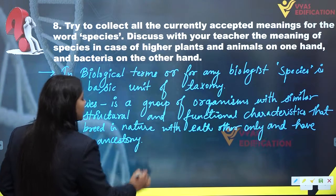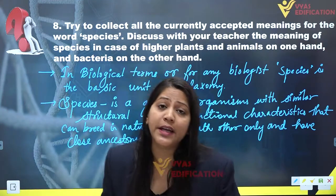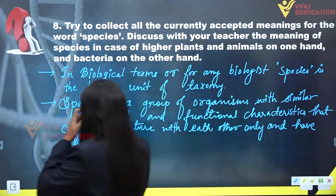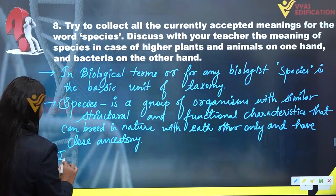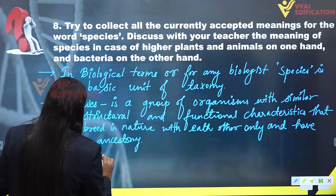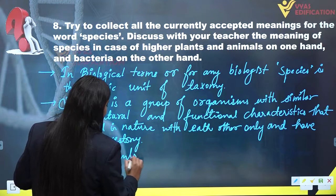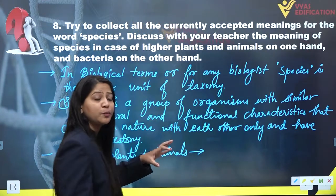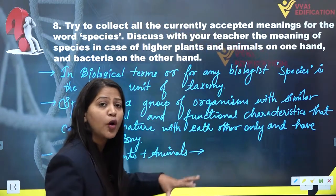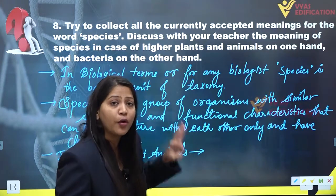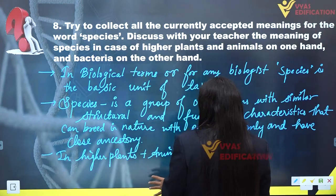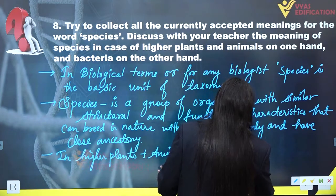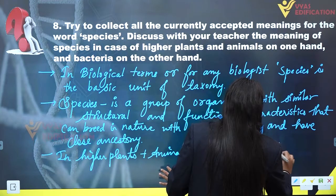This is the correct word-for-word definition of species. Now, in case of higher plants and animals, species are distinguished on the basis of their morphological characters.